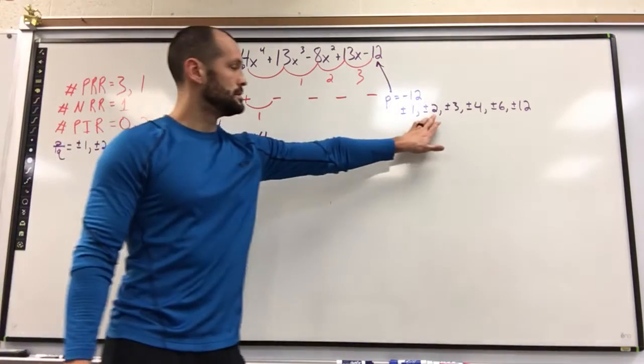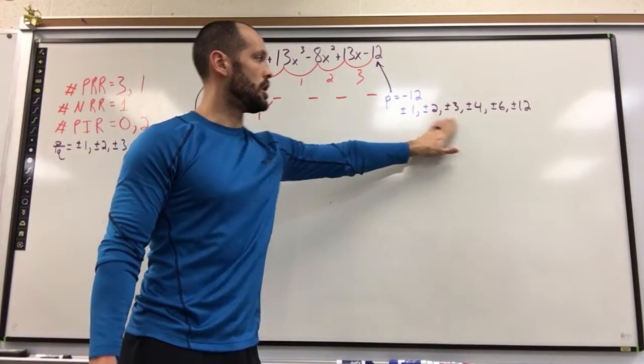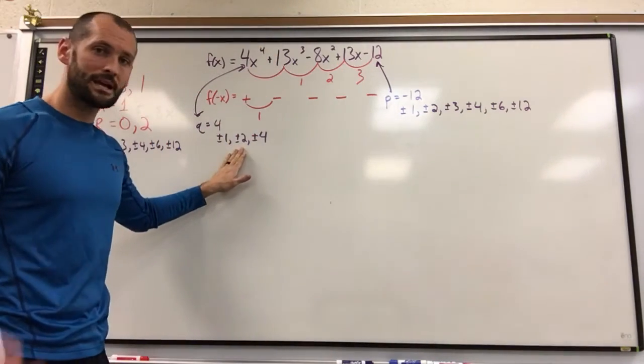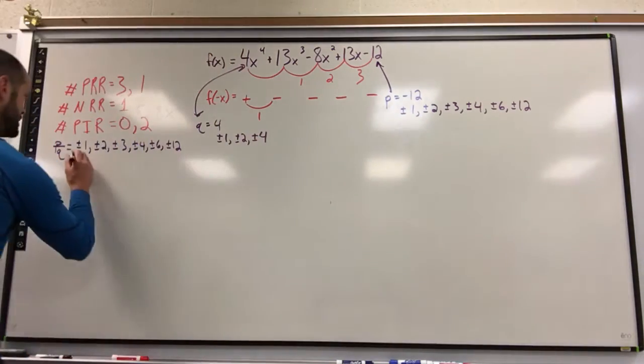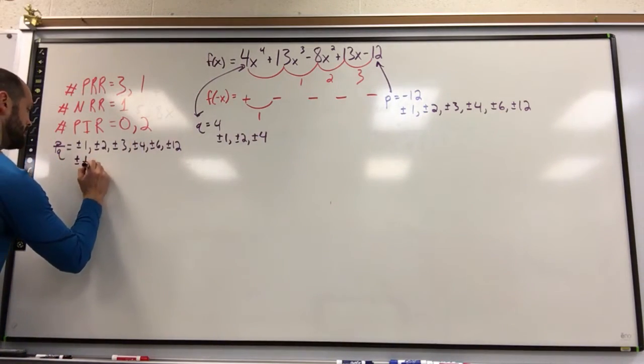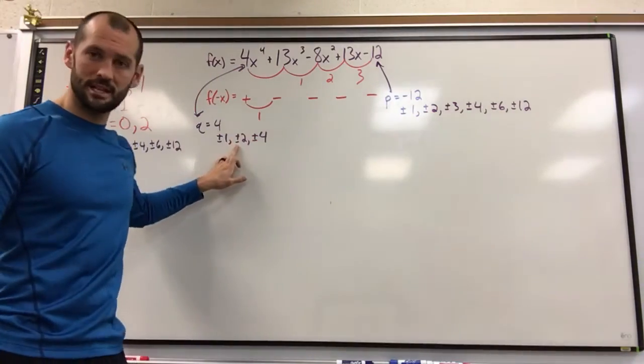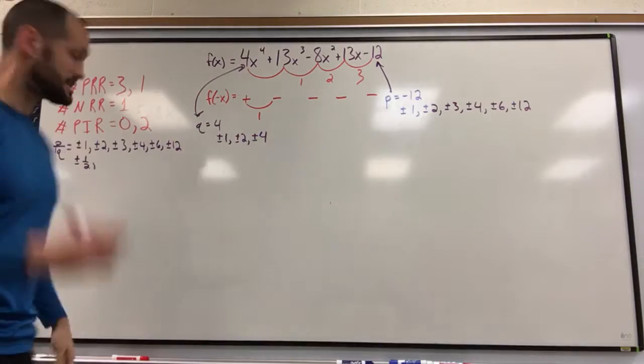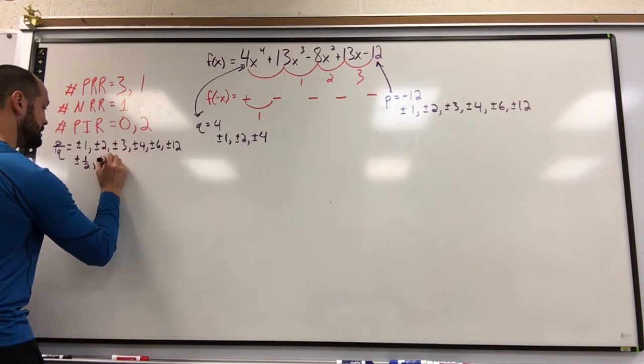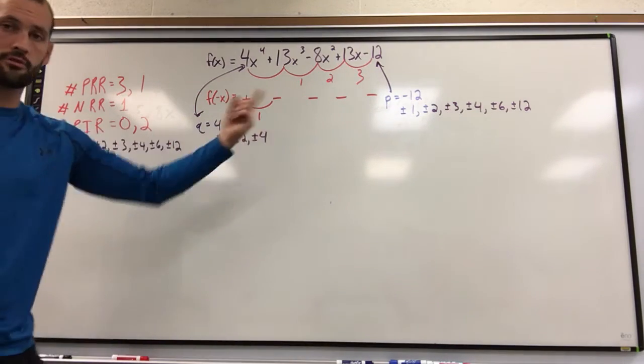Now we could have all of these over 2. Keep in mind, some of them we're going to repeat. For instance, well, 1 over 2 is going to give us 1 half. That's a new one. But if I put 2 over 2, you realize that's 1? It's already in the list. 3 over 2? That's a new one.